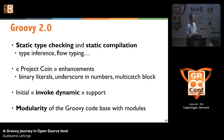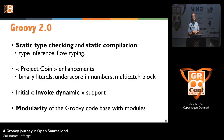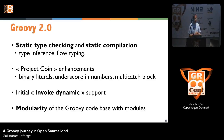Groovy 2.0 was a very important release, with the introduction of invokedynamic support and static type checking and static compilation, making Groovy pretty much as fast as Java or even slightly faster in some cases. Some Project Coin syntactical changes from Java 7 were also integrated into Groovy 2. We also made Groovy more modular, so you don't have to use the big monolithic Groovy all-jar.